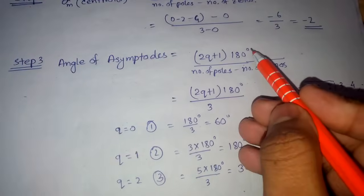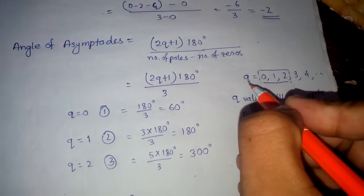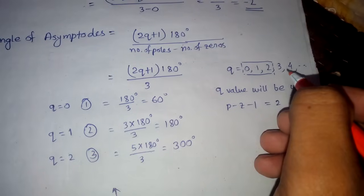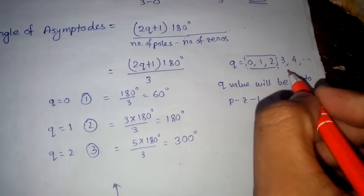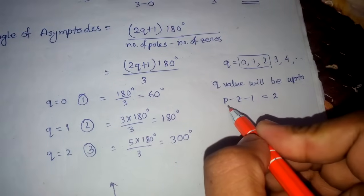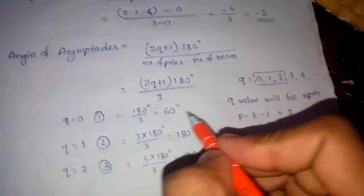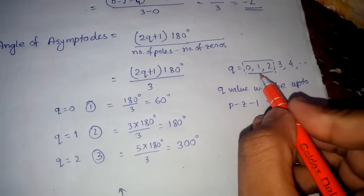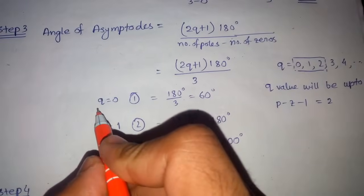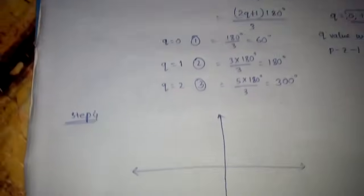Then you have to find out the angle of asymptotes using the same formula. The q value can go from zero to any number. The q value is p minus z minus 1, so p minus z equals 3, and 3 minus 1 equals 2, meaning q takes values 0, 1, and 2. For q = 0, 1, and 2, we find out the angles of asymptotes.